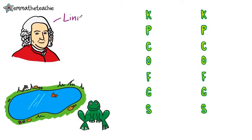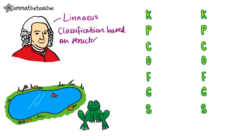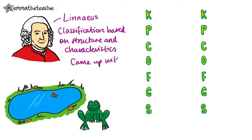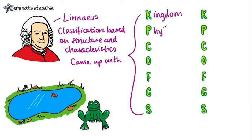In the 18th century, Carl Linnaeus developed a classification system that is still being used today. It groups living things based on their structure and characteristics. He came up with these levels of hierarchy, with the highest and biggest at the top. It goes: kingdom,